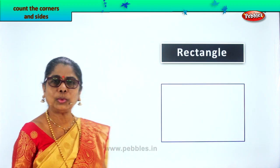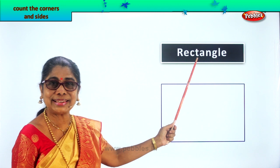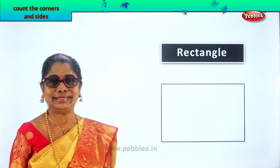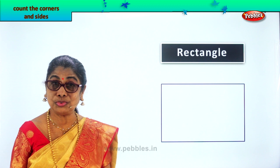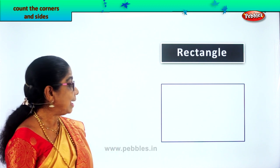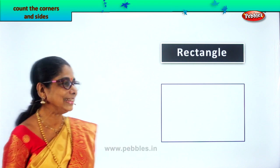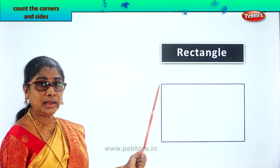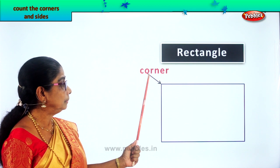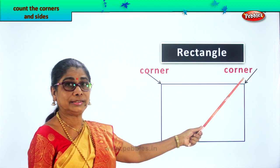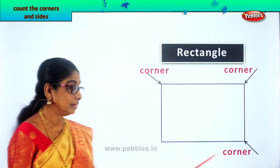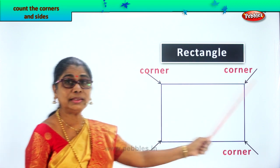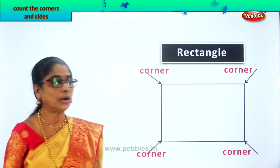Look at this. What shape is this? Rectangle. This is a plain figure rectangle. What are we going to do? Count the corners and the sides. How many corners does the rectangle plain figure have? One, two, three, four corners. A plain figure rectangle has four corners.